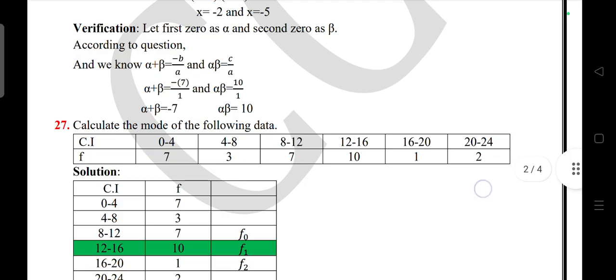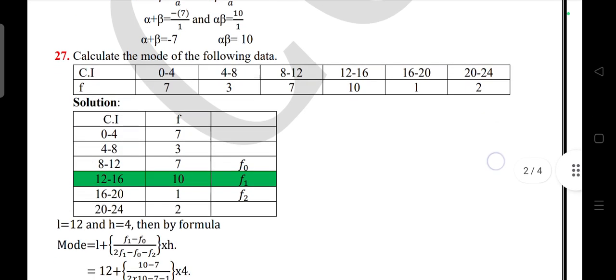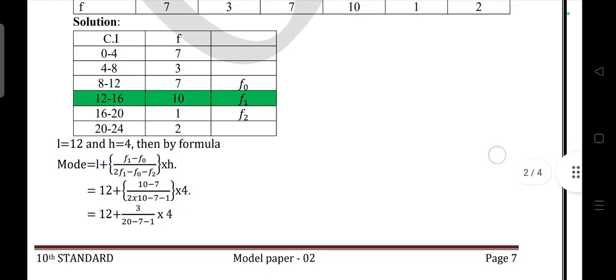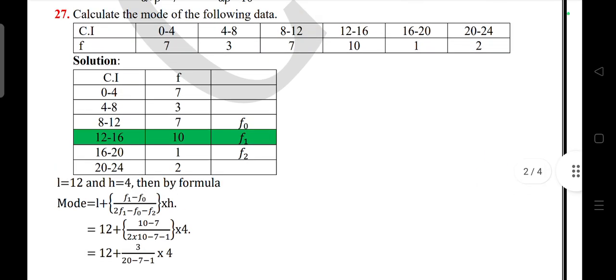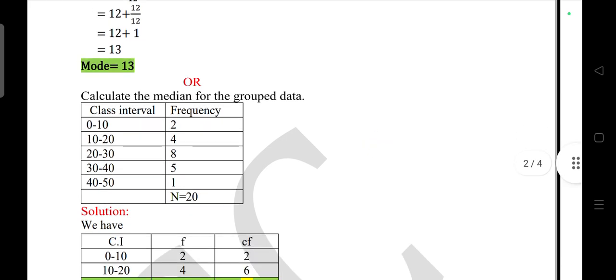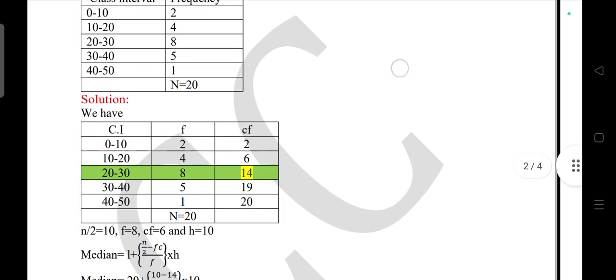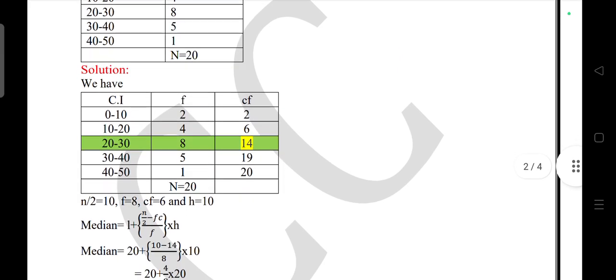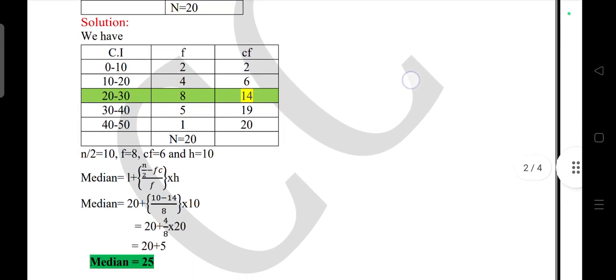Question 27: Calculate the mode of the following data. Mode is 13. Question 28: Calculate the median of the grouped data. This is the answer.